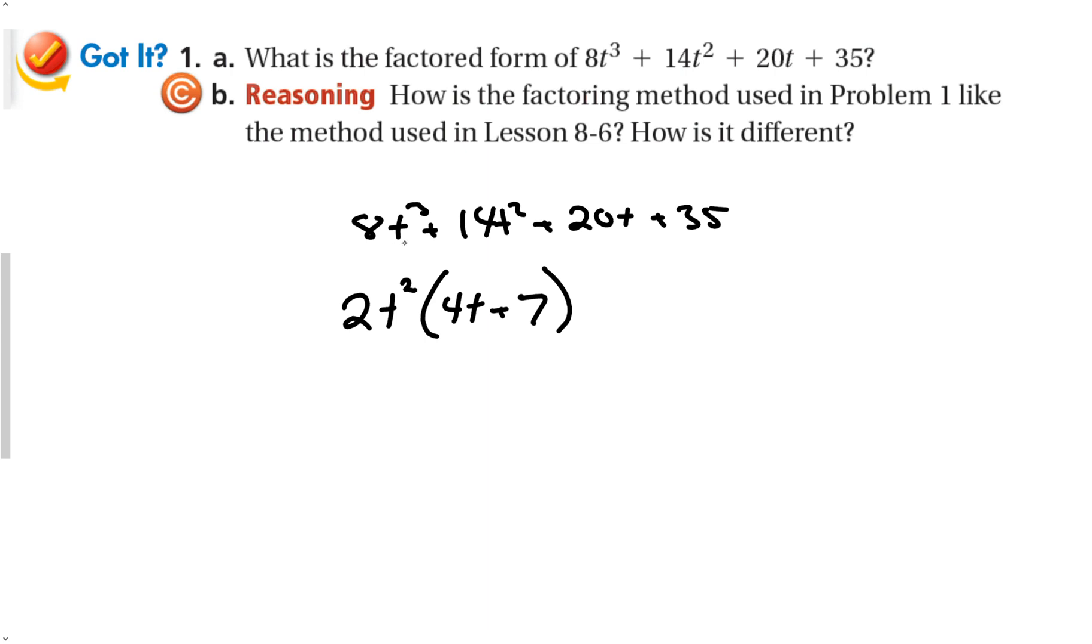Because 2t times 4t is 8t to the 3rd. 2t squared times 4t is 8t to the 3rd. 2t times 7 is 14t. Plus, what do 20t and 35 have in common? Both of those have a 5. And that's a 4 times t left over plus 7. And look at that. Those two binomials are the same. So my answer is 2t squared plus 5 times 4t plus 7.